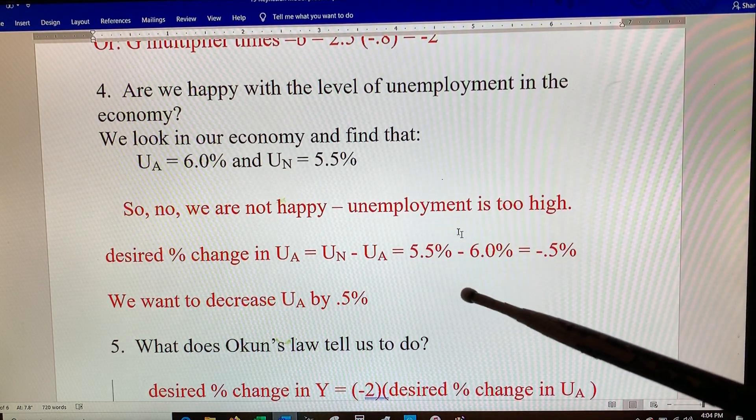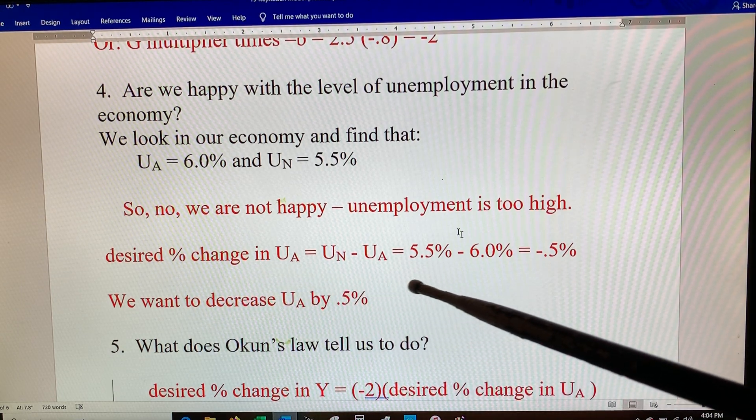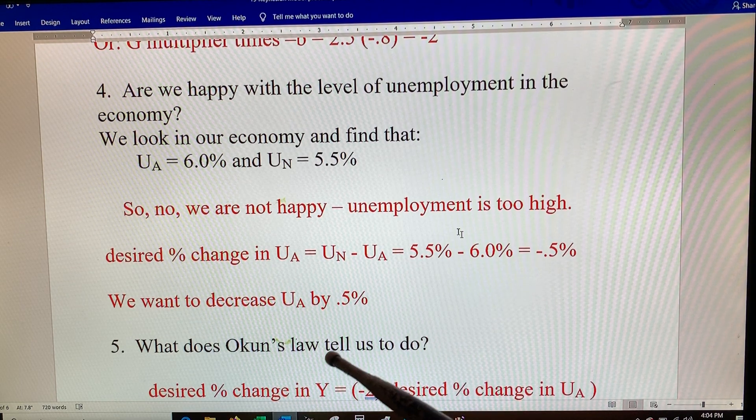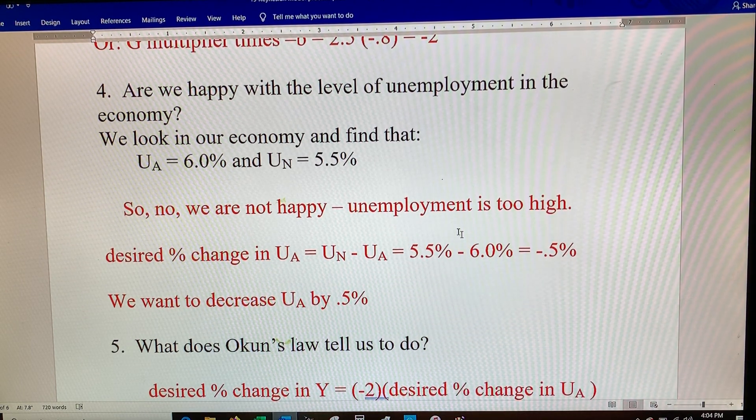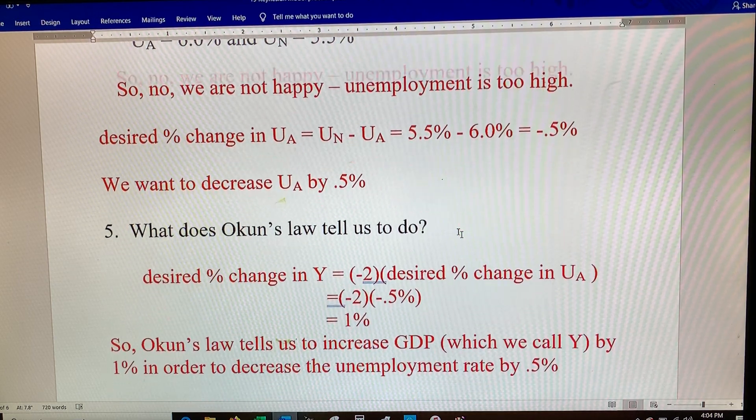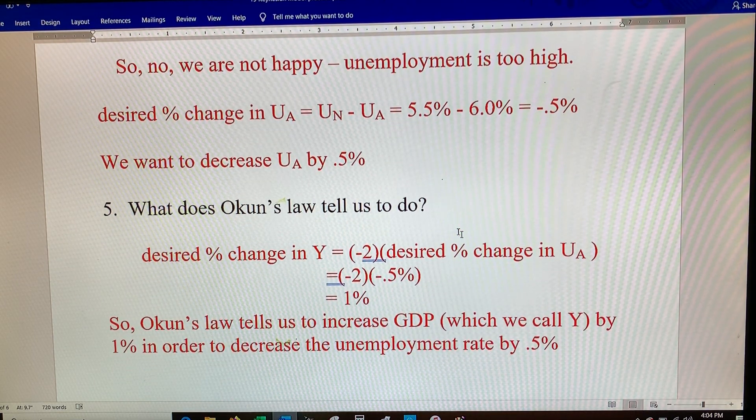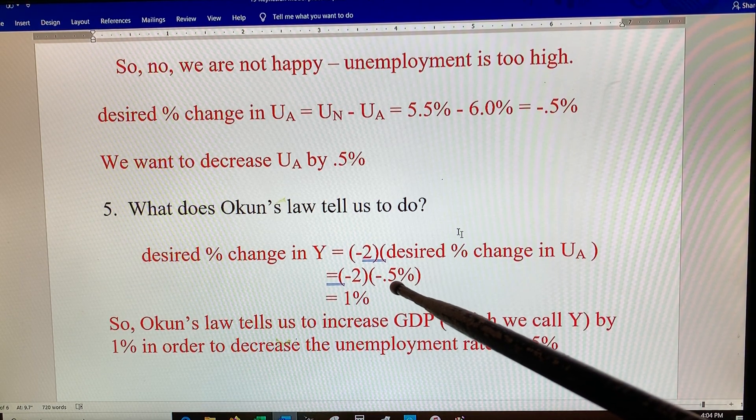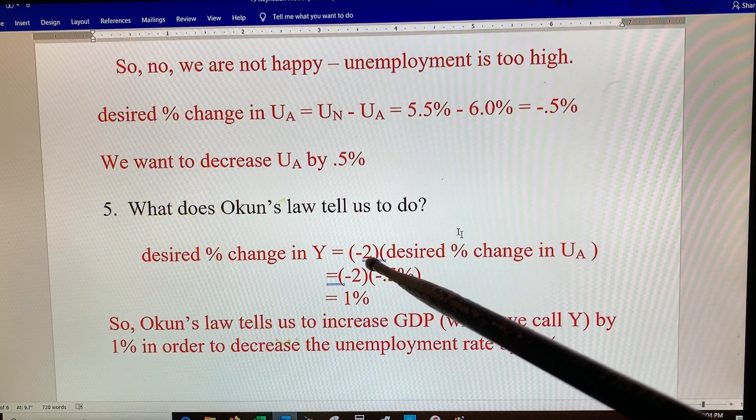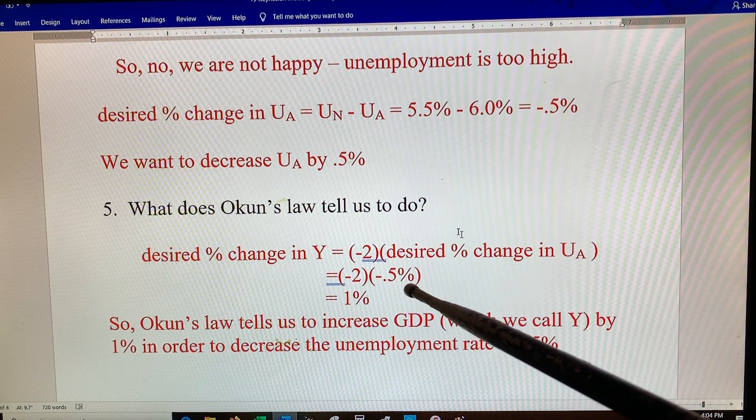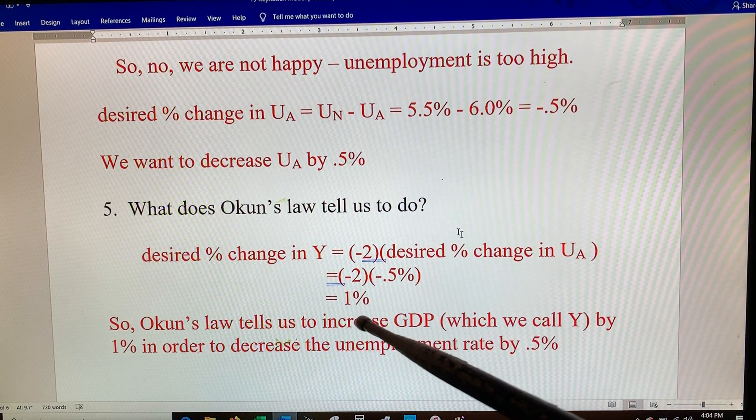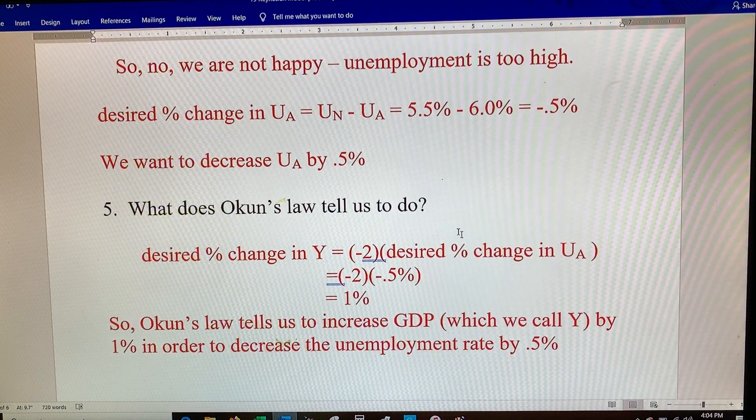So how do we do that? Arthur Okun came along and said, well if you want to drop unemployment by minus half a percent, you multiply that by minus two and you would get minus two times minus a half is one, positive one. So you'd raise Y by one percent. In other words, you create jobs to get rid of that unemployment.